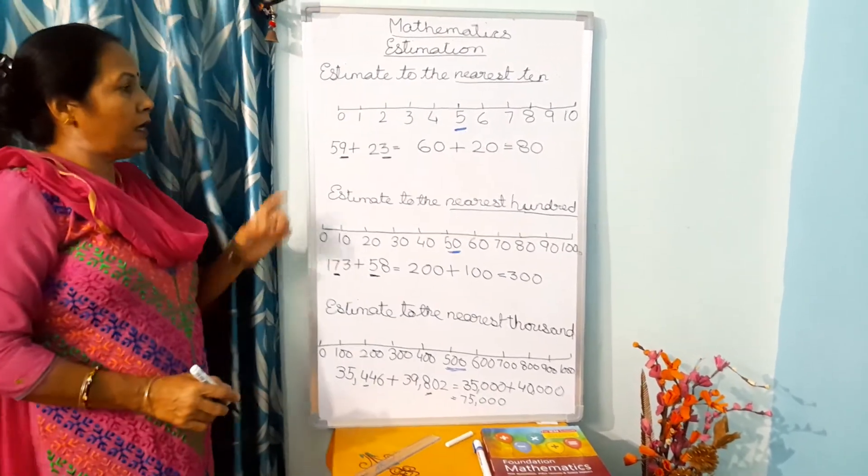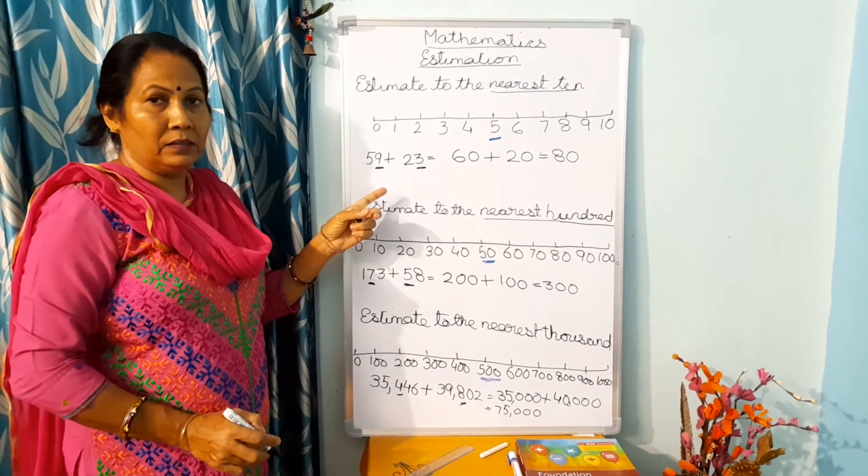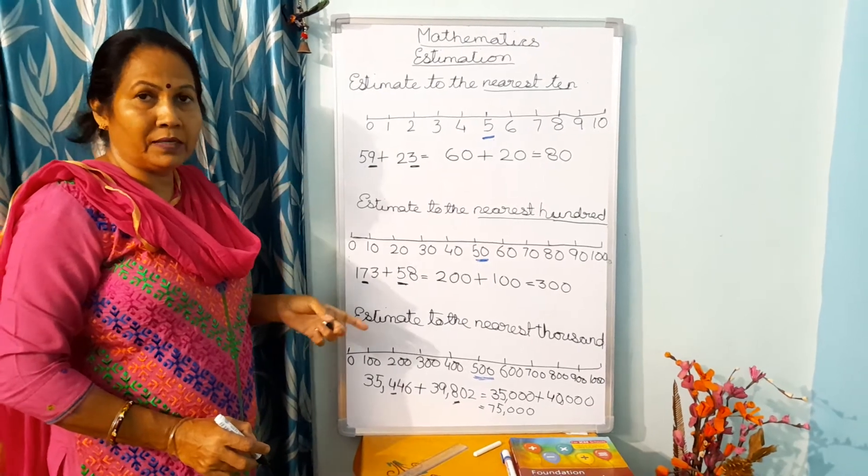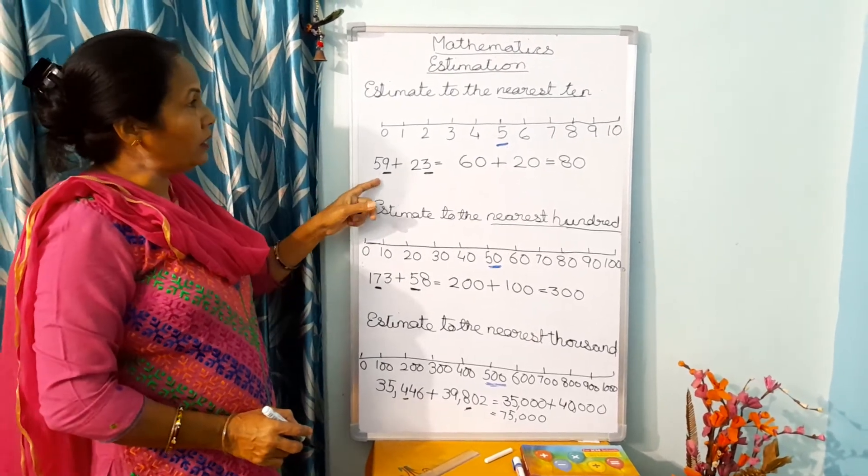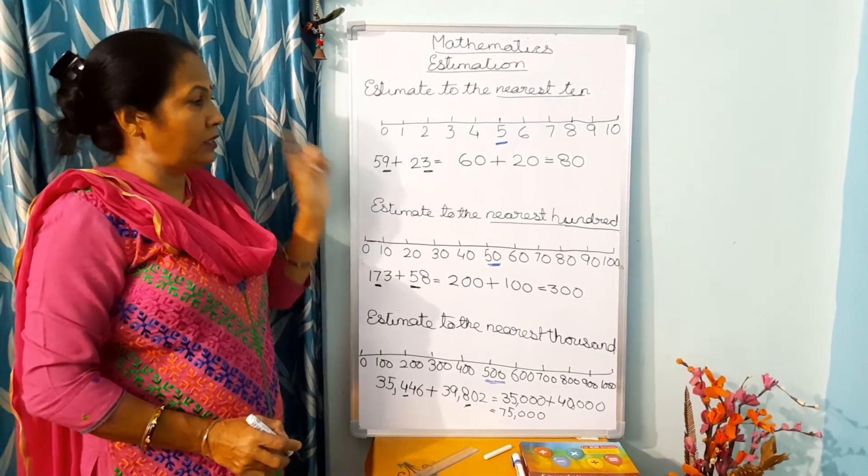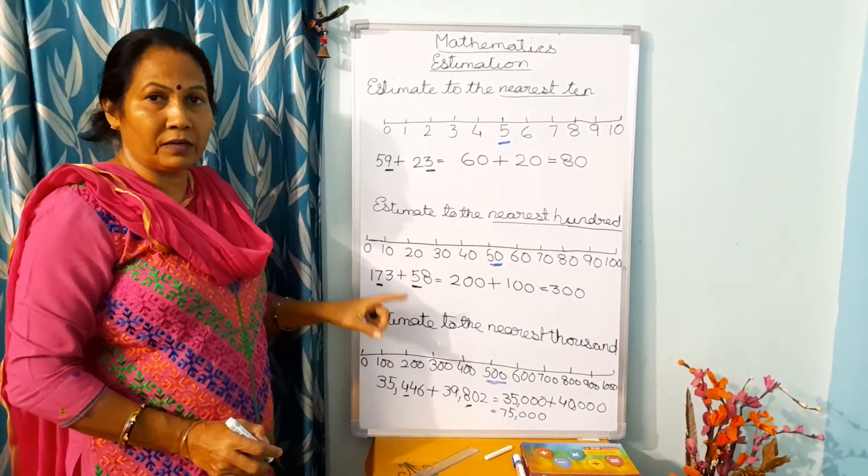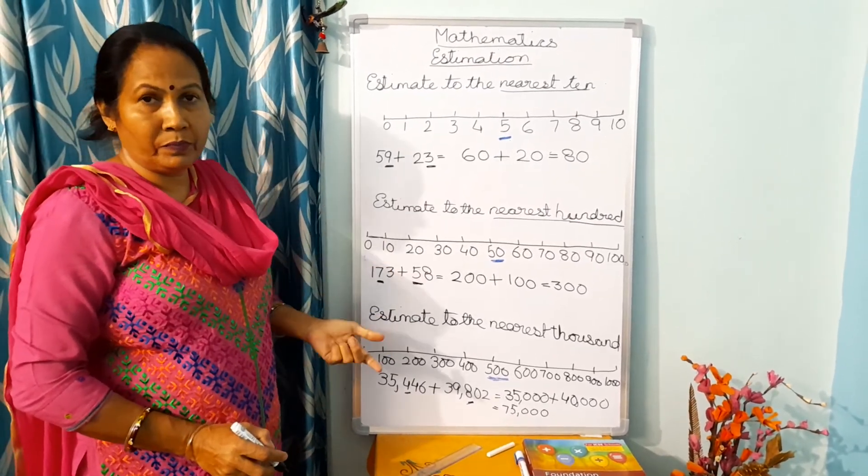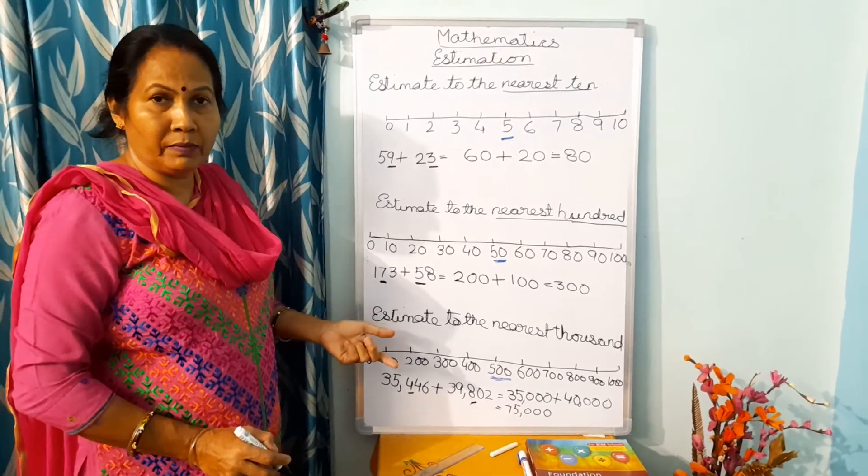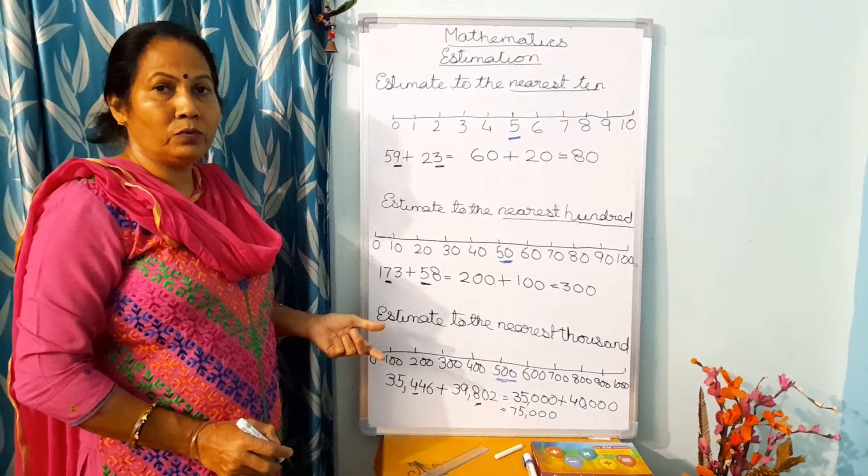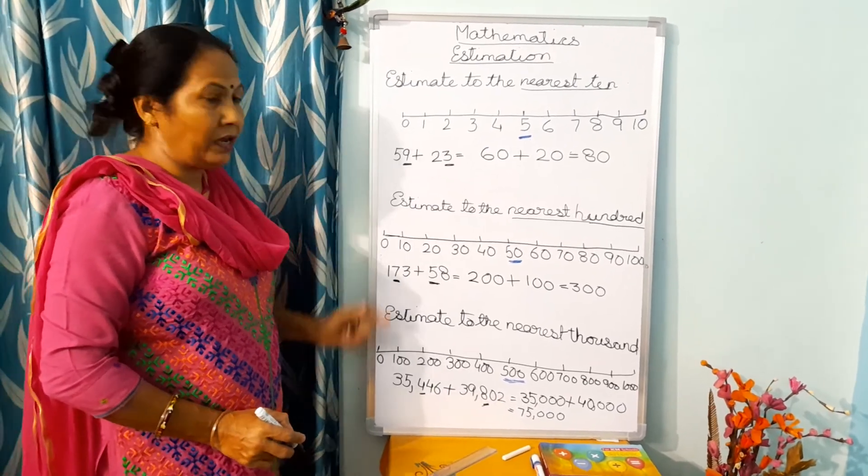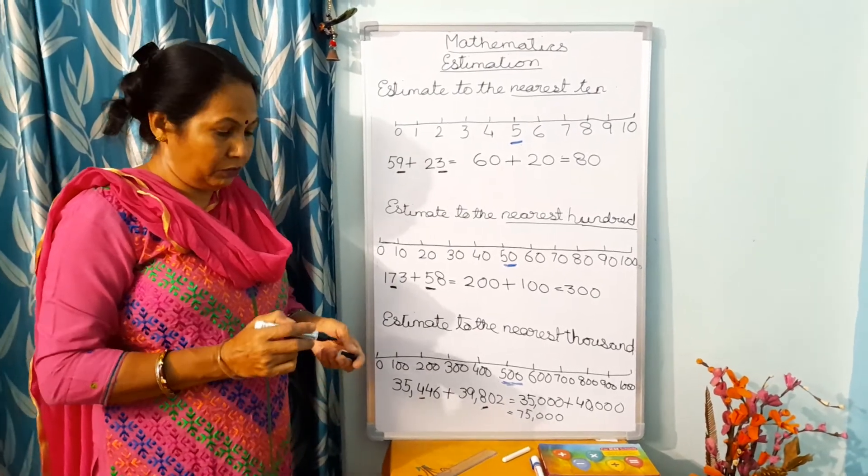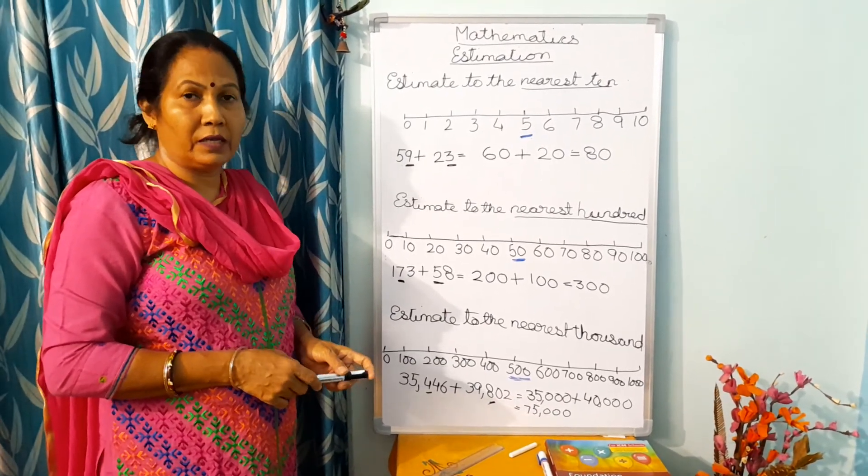Now children, here I have shown you how to add. Same thing you have to do in subtraction, in multiplication and division. You will first estimate to the nearest 10 or 100 or 1000, whatever has been asked in the question, and then you will do simple subtraction, simple division and simple multiplication. I will send you the solved sums. Here I have explained to you. You see the video. If you have any problem, children you can ask in the group. Thank you.